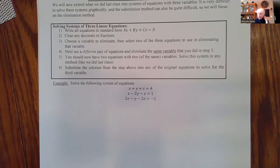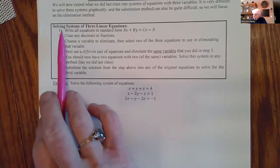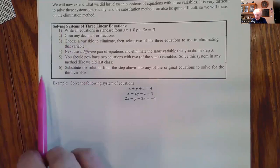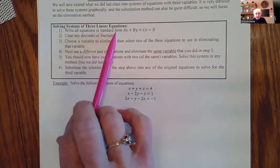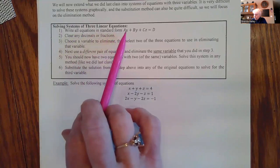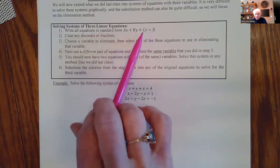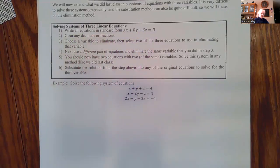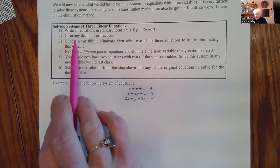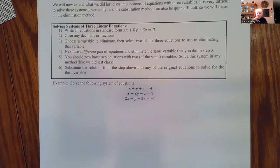Let's go ahead and get started. We're going to solve a system of three linear equations with three unknowns. Step one: write all equations in standard form — ax plus by plus cz equals d. Step two: clear any decimals or fractions. If you have decimals, multiply by 10, 100, or 1000. If you have fractions, multiply by a number all the denominators divide into.